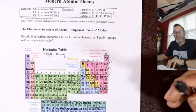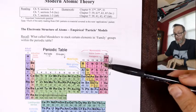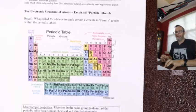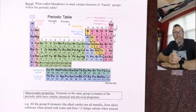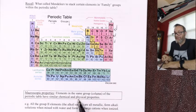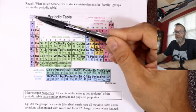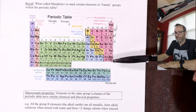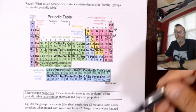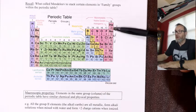Mendeleev put things in the same column because macroscopically — and remember, he could only do test tube experiments at the time — they have similar chemical and physical properties. They're all metals, they're all alkalis when dissolved, these are all gases and they're all inert. So you put them in a family group, which we now call a group or a column.